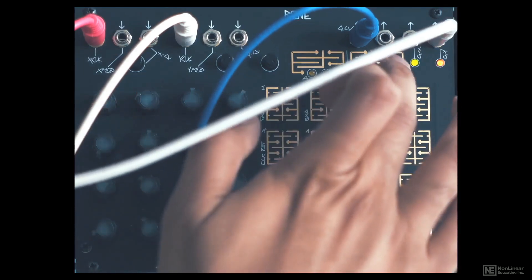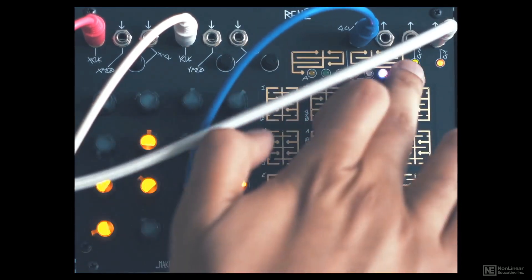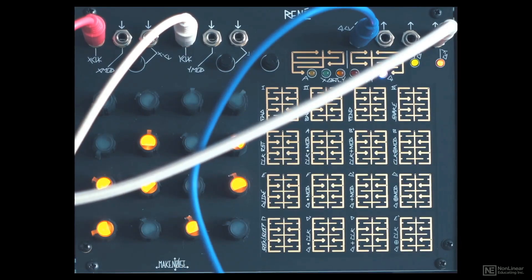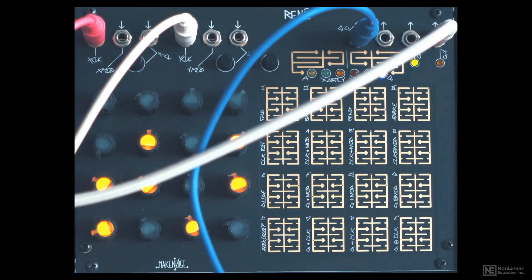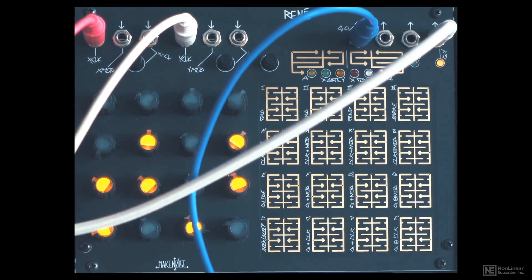Let's tap the program A button again and tap to the last page, the Q page. So this is the scale we're using currently, but we can also store it in memory. You can store up to four scale sets in memory. I'll turn off that clock for now.